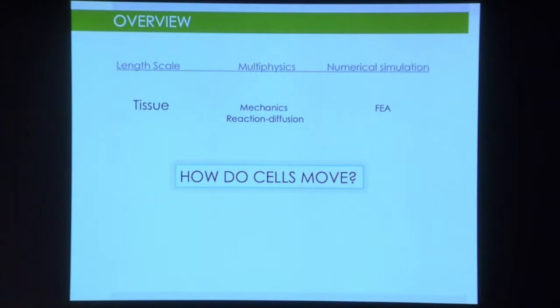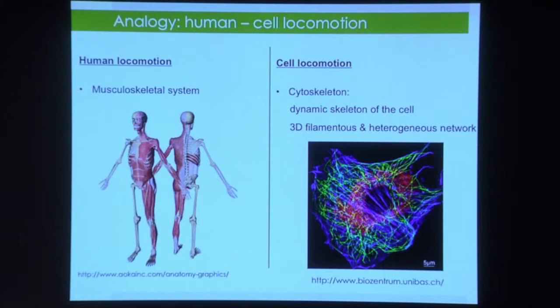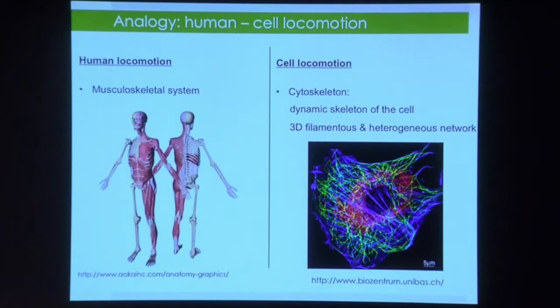But how do cells move? To understand this, we go down in scale to the cell level. I will make a small analogy comparing the movement of cells to our own body. When we move, we use our skeleton, which supports traction and compression forces. The cell also has a skeleton — called the cytoskeleton. The main advantage of the cytoskeleton is that it is dynamic: it can change depending on the needs of the surrounding environment.